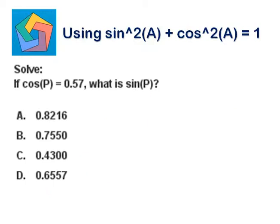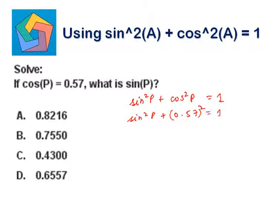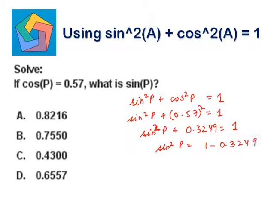Next problem. Solve: if cos p is equal to 0.57, what is sine p? We can say sine squared t plus cos squared t is equal to 1. Sine squared t plus 0.57 squared is equal to 1. 0.57 squared is 0.3249.